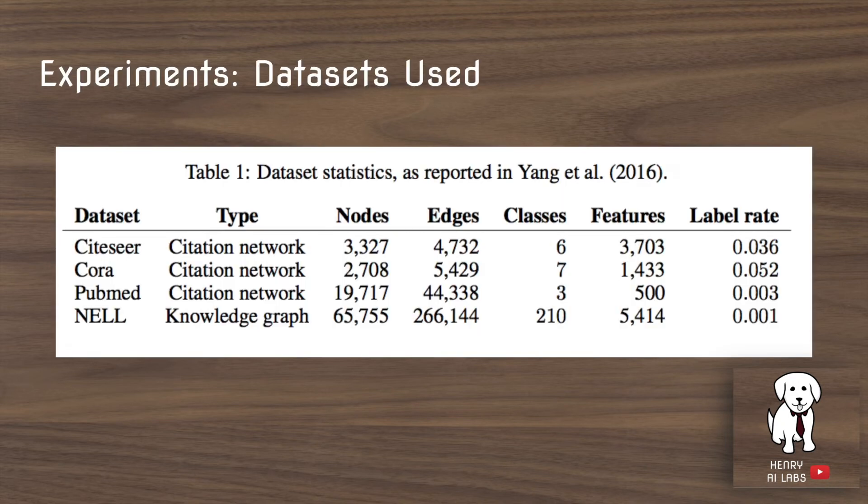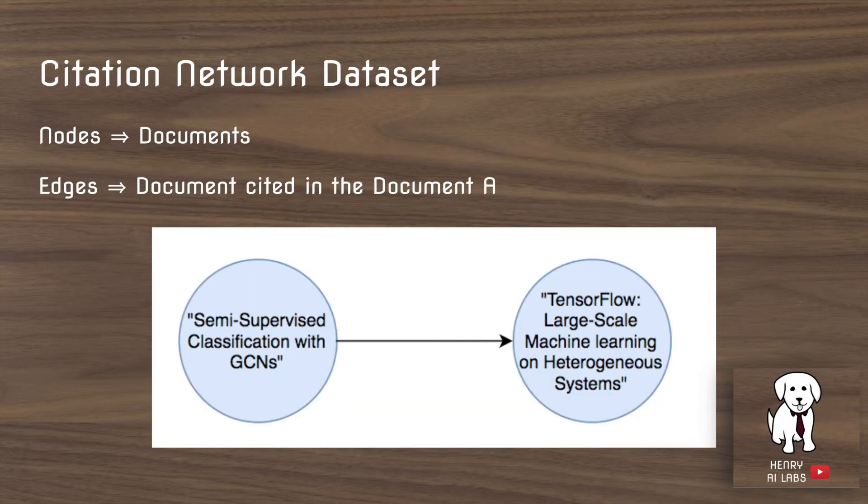So the dataset that they use in the paper, these are the datasets that they use in the paper. But this video will focus on the citation network dataset. So what the citation network dataset is, is each node represents a published research paper. So it could be something like semi-supervised classification with GCNs. And this might be labeled according to the topic, like deep learning on graphs. And the edge represents a citation to the tensorflow paper. And the tensorflow paper could be labeled as something else, like deep learning frameworks.